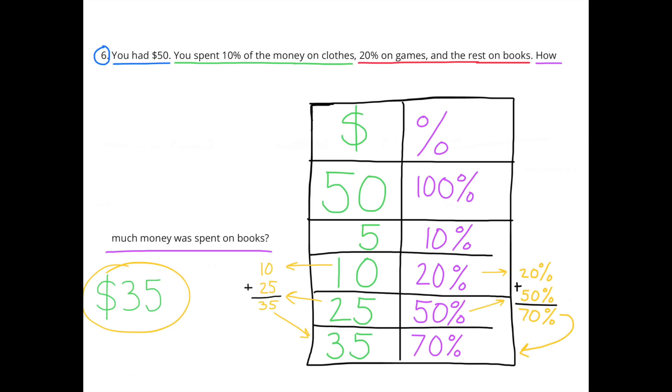Number 6. You had $50. You spent 10% of the money on clothes, 20% on games, and the rest on books. How much money was spent on books?